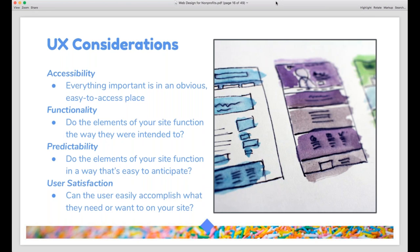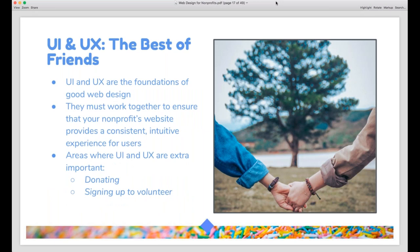Lastly, consider user satisfaction — think about what users will want to do on your site and how easy it is for them to do those things. At the end of the day, UI and UX work together to make your website functional, cohesive, and useful. These are the building blocks of a strong website. As a nonprofit, think about the most important functions of your site, like donating or signing up to volunteer, and make sure UI and UX are working in perfect harmony on those pages.